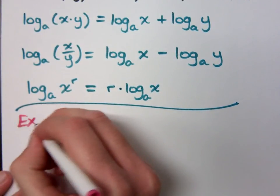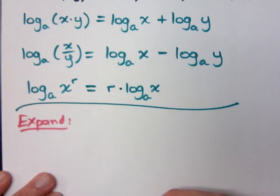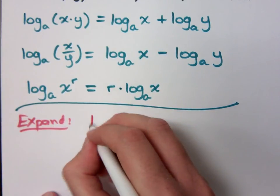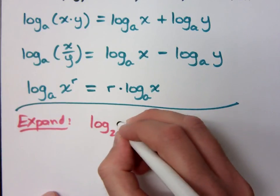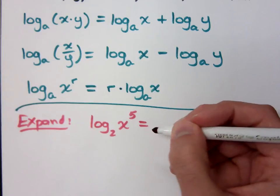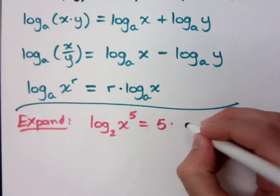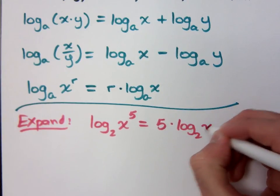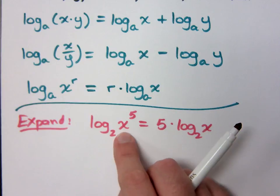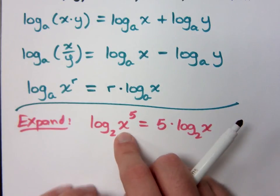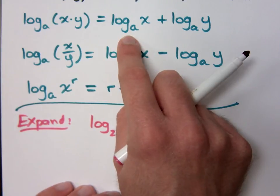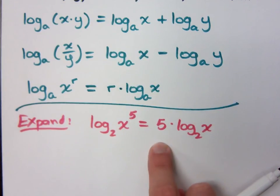Here's how we can use these properties of logarithms — you can expand expressions using them. For example, log with base 2 of x to the 5th: looking at the power rule, you rewrite this as 5 times log with base 2 of x. This works because x to the 5th means x times x times x times x times x — five factors — so you'd have five log x's added together.